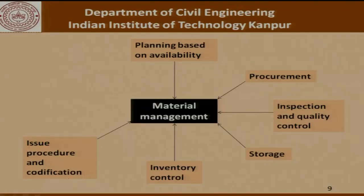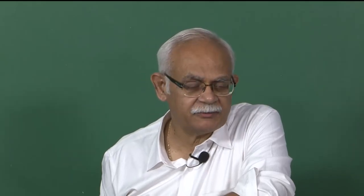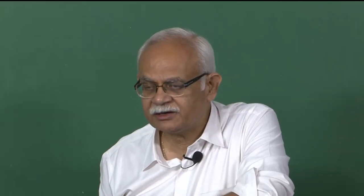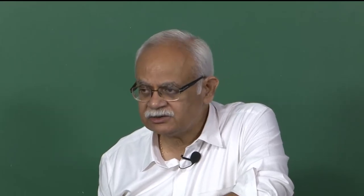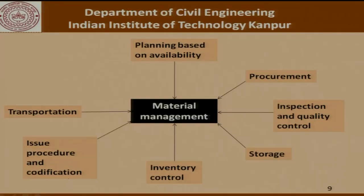There has to be a process and procedure so that we know how much material was procured, when it was procured, to whom it was issued, where it was consumed, when it was consumed, whether it was properly inspected when it came in, whether inspection was completed when it went out — all to make sure the material has not undergone any degradation while in storage. Apart from that, there are transportation issues, and computerization has helped greatly in ensuring a more sophisticated material management system for construction projects.